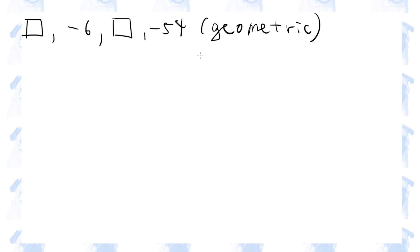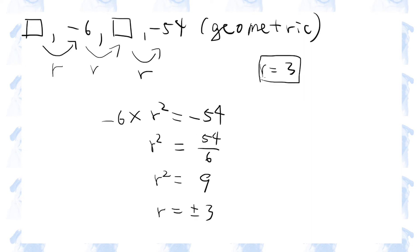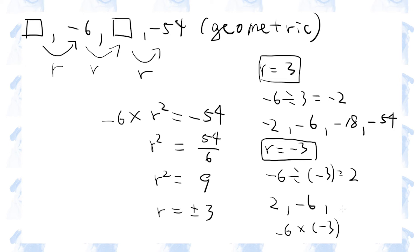This time we have a geometric progression. In a geometric progression, we multiply each term by a constant ratio r. Therefore, minus 6 times r squared equals minus 54, so r must be plus or minus 3. If r is plus 3, the first term is minus 6 divided by 3, which is minus 2, and the terms are minus 2, minus 6, minus 18, minus 54. If r is minus 3, the first term is 2, and the third term is minus 6 times minus 3, which is 18.